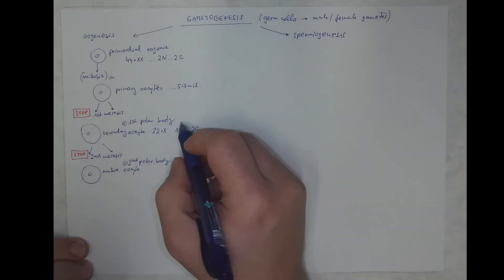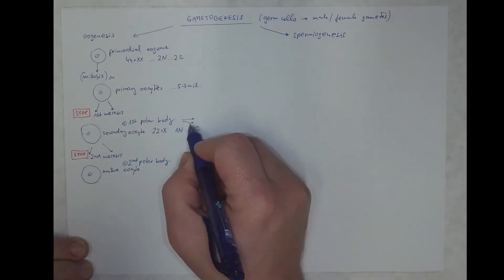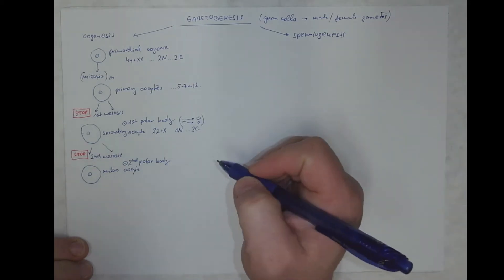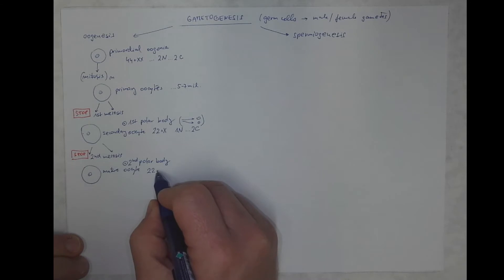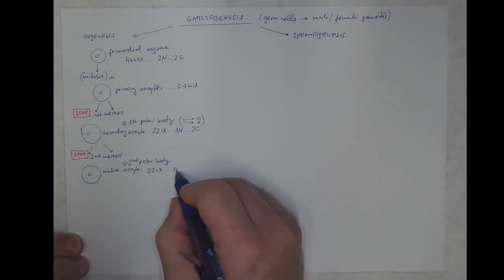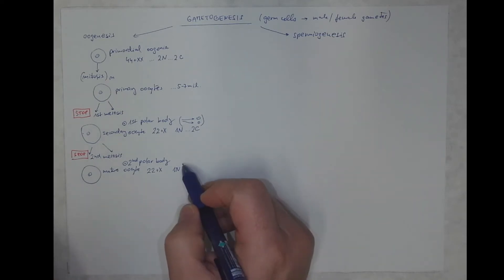By the way, the first polar body should also divide in the second meiosis, but sometimes it does not, and it's not important. Now, the mature oocyte has 22 plus 1 X chromosome, so 23. It's haploid, but it is half the nuclear content compared to secondary oocyte, because there was no duplication of chromatids in between.